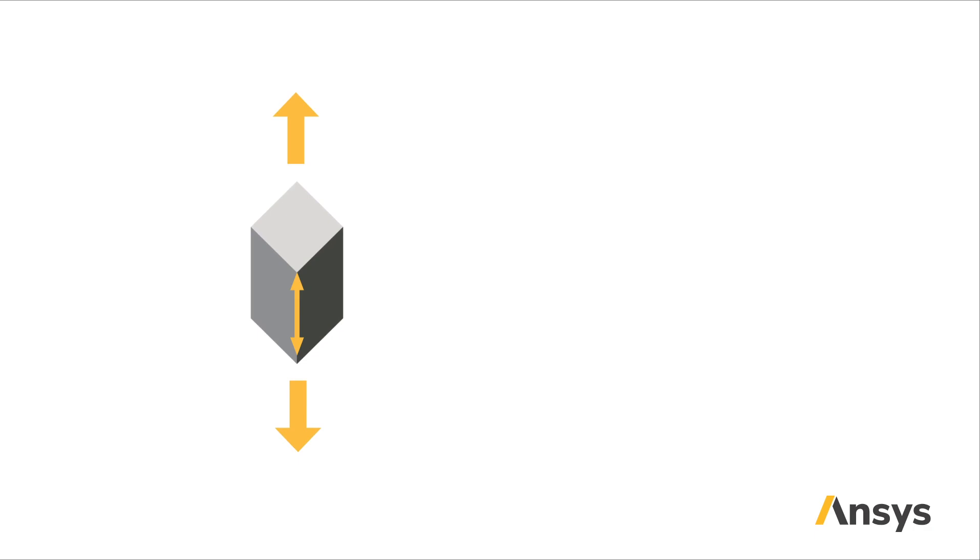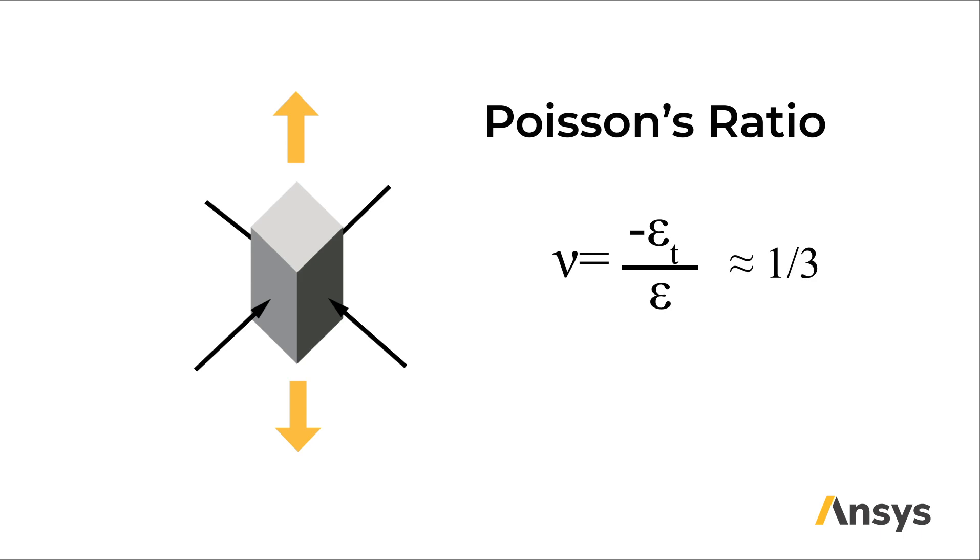But if we take a look at our cube again, and apply our force, we can see that the dimensions of my cube in the other two axes are also changing. Poisson's ratio helps us describe this change in the other two directions. If we're speaking about our tensile case, the other two directions contract. Poisson's ratio is given by lowercase nu and is the negative ratio of my transverse strain epsilon t divided by the strain of a tensile loading sample. Since our cube is contracting in the transverse direction, Poisson's ratio is a positive value, usually close to one-third.